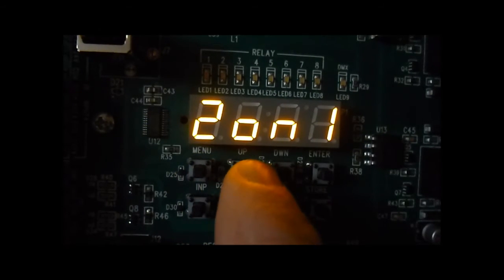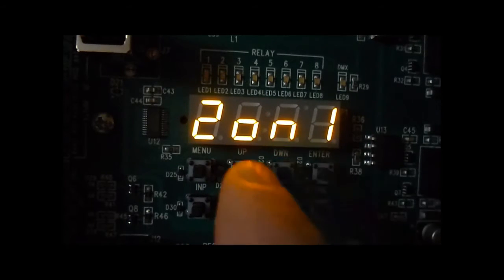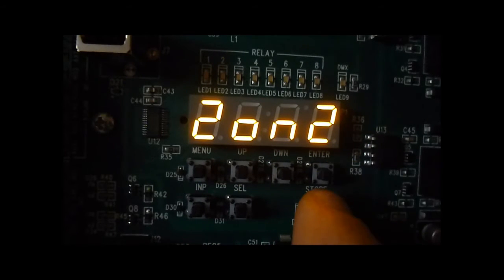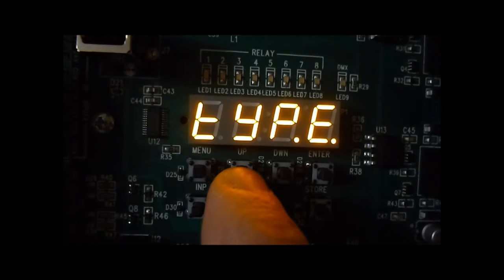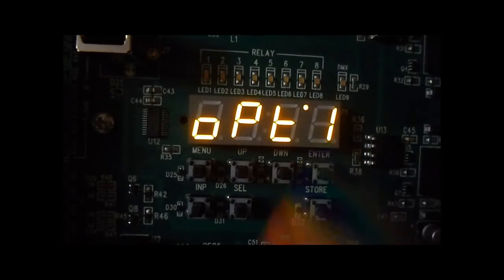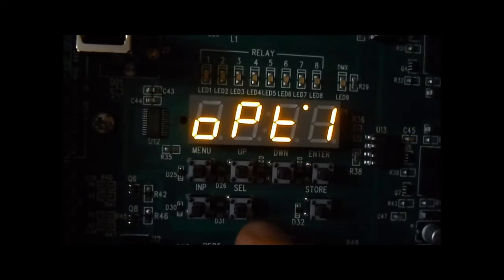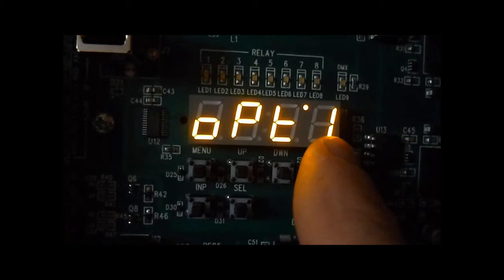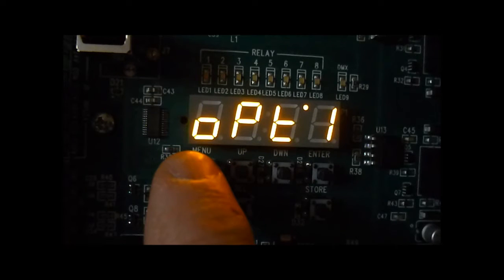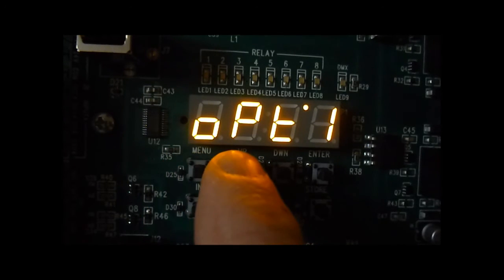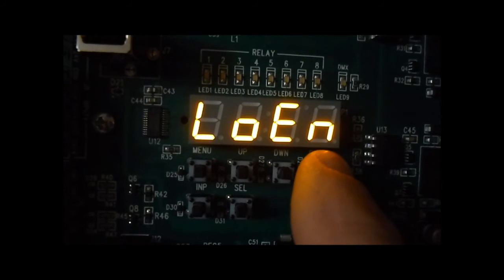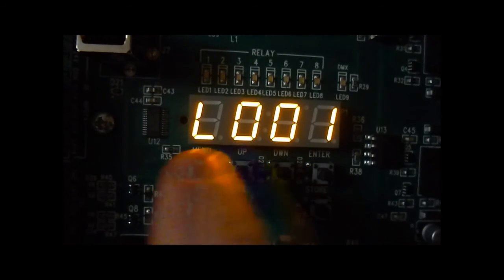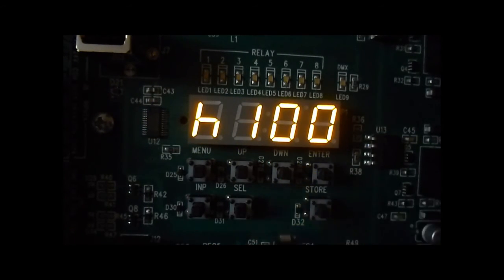To change another zone, we'll back out to the zone and go to zone 2. Press enter and again we see the menu items for type and trim which we can set. Currently zone 2 is option 1, which is 0 to 10 volt dimming, and trim is at defaults: low trim is 1%, high trim is at 100%.